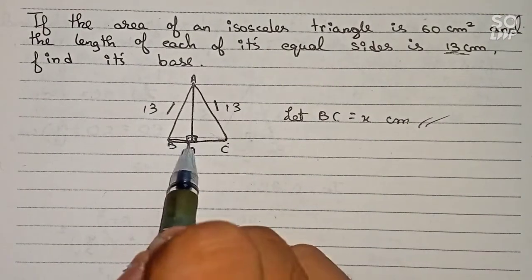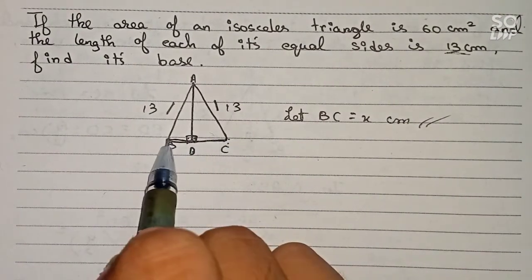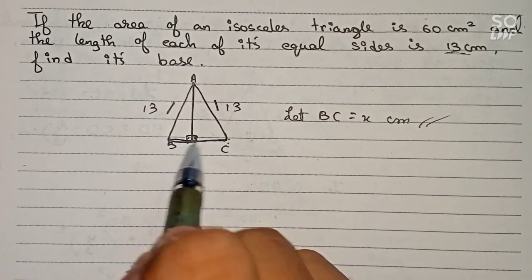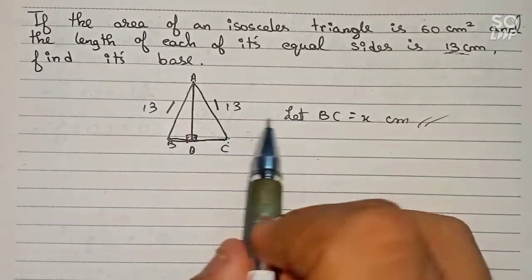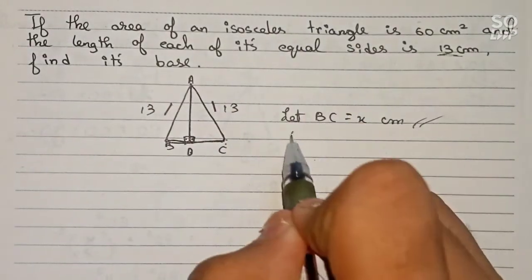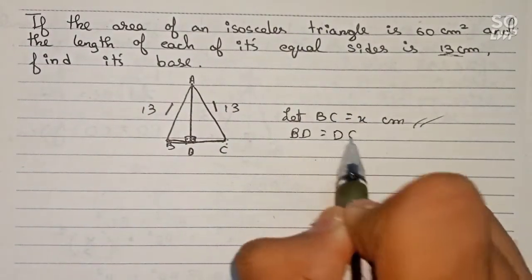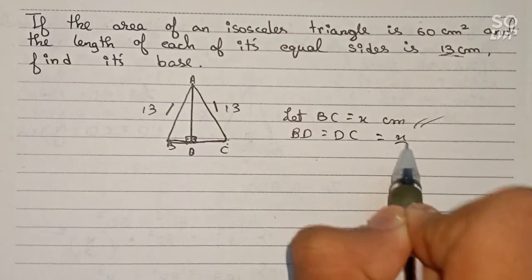Since AD bisects BC, BD equals DC, and they are each half of BC. Therefore BD = DC = x/2 cm.